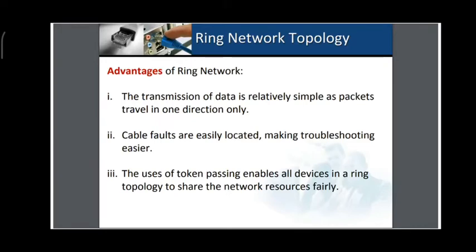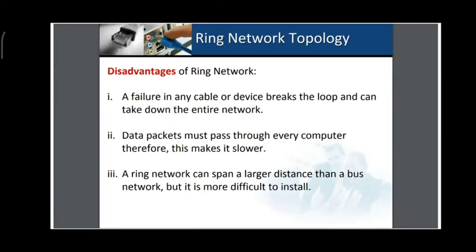Advantages of ring topology: the transmission of data is relatively simple as packets travel in one direction only. A packet is the smallest form of data. Cable faults are easily located, making troubleshooting easier. The use of token passing enables all devices in a ring topology to share the network resources fairly — one followed by the second followed by the third, as shown in the attendance example.